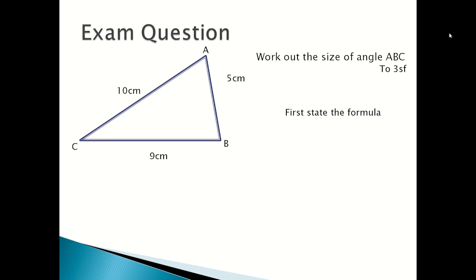So you first state your formula, which is A squared equals B squared plus C squared minus 2BC cos A. And then you rearrange the formula so you can get the angle. So you will rearrange to cos A equals B squared plus C squared minus A squared over 2BC.